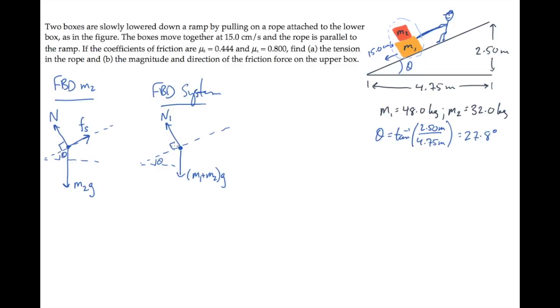There's a tension directed up the ramp, and a kinetic friction force also directed up the ramp. This is kinetic friction because it's between crate one and the ramp, and those surfaces are moving relative to each other. It's directed up the ramp opposite the motion.